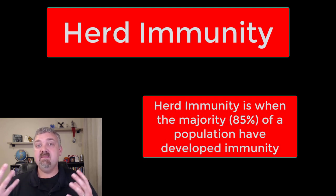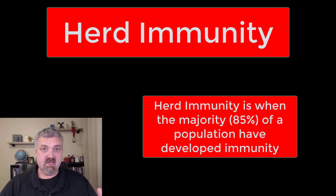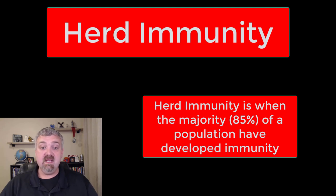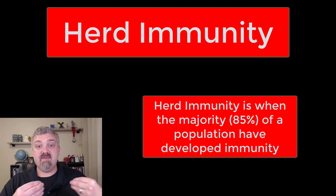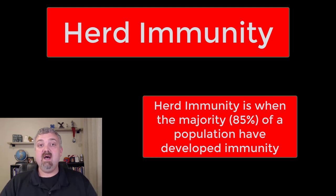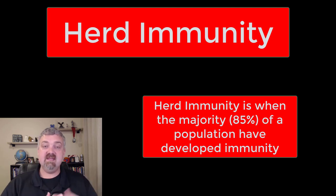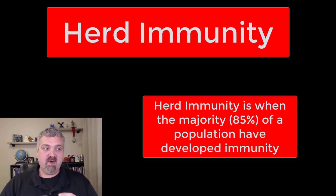Herd immunity is when the majority of a population have developed immunity. Obviously vaccines are a way to do that, but there is also natural immunity. You can even look over history at what's called genetic immunity, which means that the people alive today are the ancestors of survivors that made it through certain diseases that are endemic to given areas. The ones that couldn't fight off that pathogen didn't live.